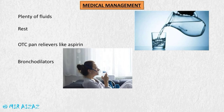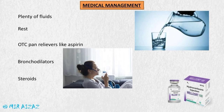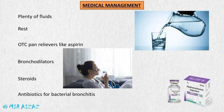Bronchodilators dilate the inflamed bronchial tubes, making the passage of air through them easier. Steroids such as hydrocortisone or dexamethasone can be used to decrease the inflammation of the bronchial tubes. For the bacterial cause of bronchitis, antibiotics are used.